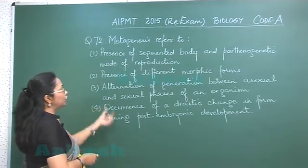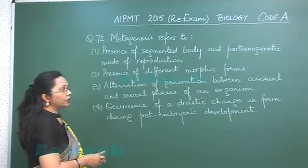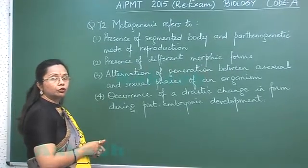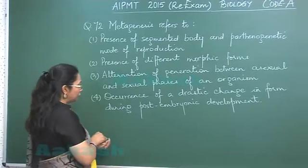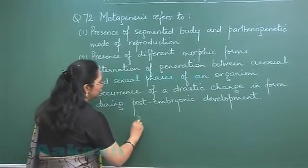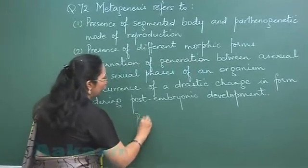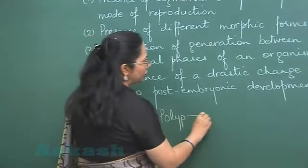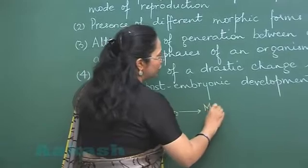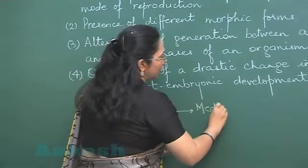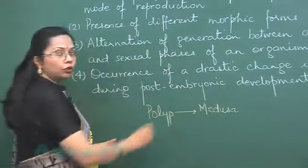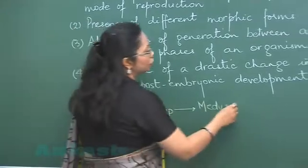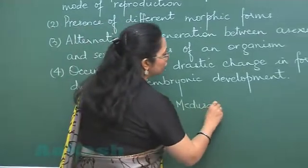So the answer is option three: alternation of generation between asexual and sexual phases of an organism — that is the reference to metagenesis. The polyp stage, by budding and asexual reproduction, produces the medusa.